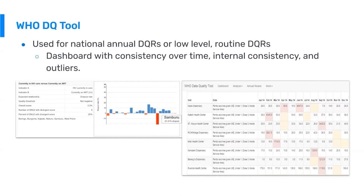The tool presents you with dashboards for consistency over time, internal consistency, and it enables you to do outlier detection. This tool was developed several years ago, and the goal is that it will continue to be supported, but all of the data quality analytics it introduced are being merged into the standard DHIS2 visualization applications — the data visualizer app as well as the dashboard app.